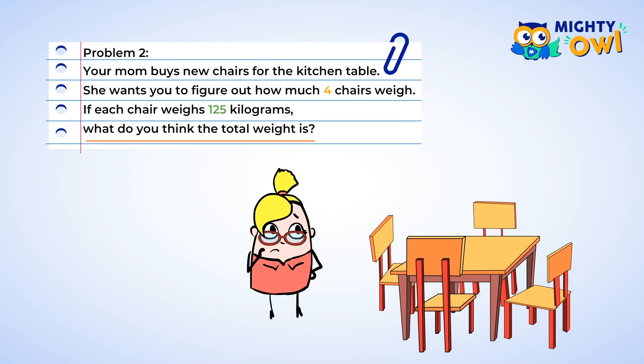Your mom decided she wanted to buy new chairs for the kitchen table, and she wants you to figure out how much four chairs will weigh. Now, if each chair weighs 125 kilograms, what do you think the total weight is? Okay, great. We can do this. We know that if all the chairs weigh the same, we can use multiplication to find the answer.